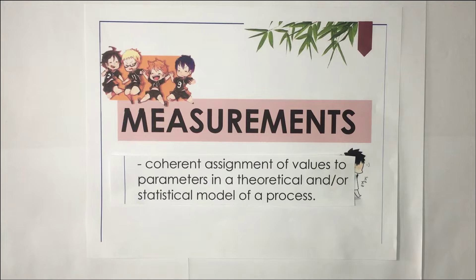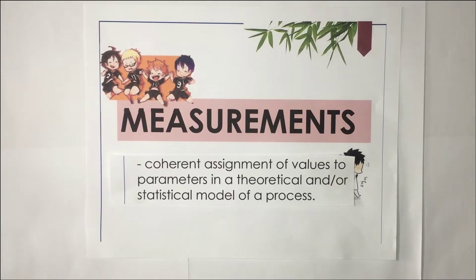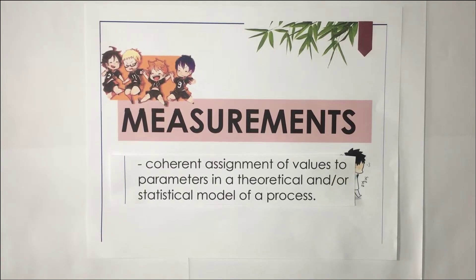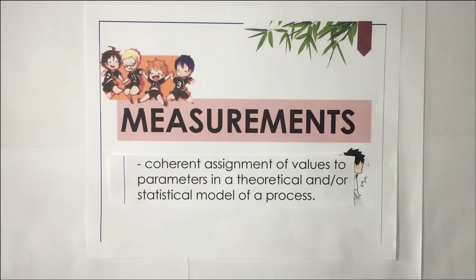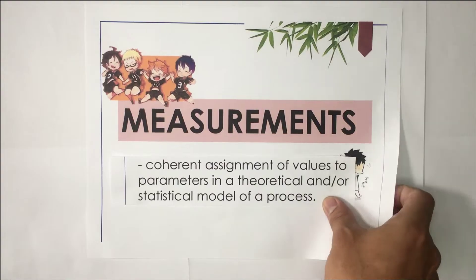Measurement is also important because numbers are usually the most convenient, compact, and least ambiguous way of representing knowledge. In physics, measurement is important because it tells us the size or magnitude of something by comparing the unknown quantity with some standard quantity of equal nature, known as measurement units.